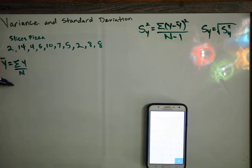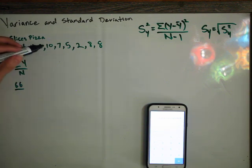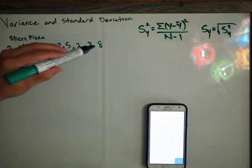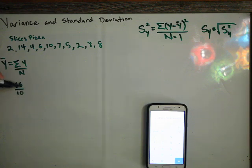So we got 66 is our total, and there are 10 people. That gives us a mean of 6.6. So y bar is 6.6.